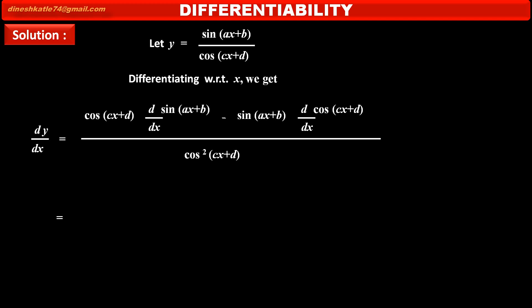Solving the derivatives by chain rule, we get cos(cx + d) as it is, into derivative of sin(ax + b), which is cos(ax + b).